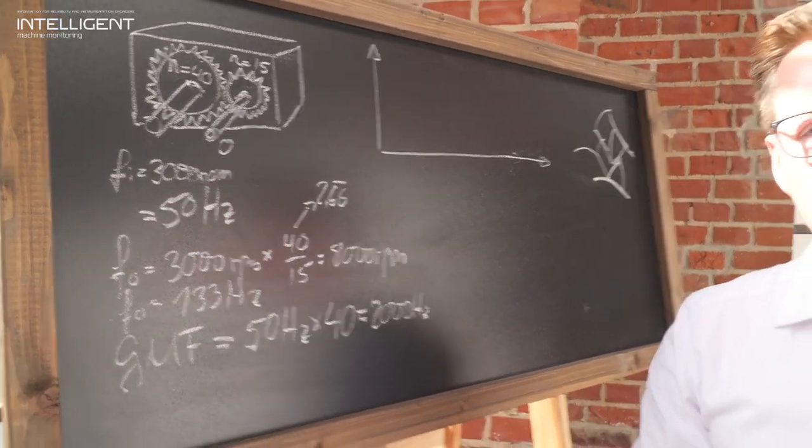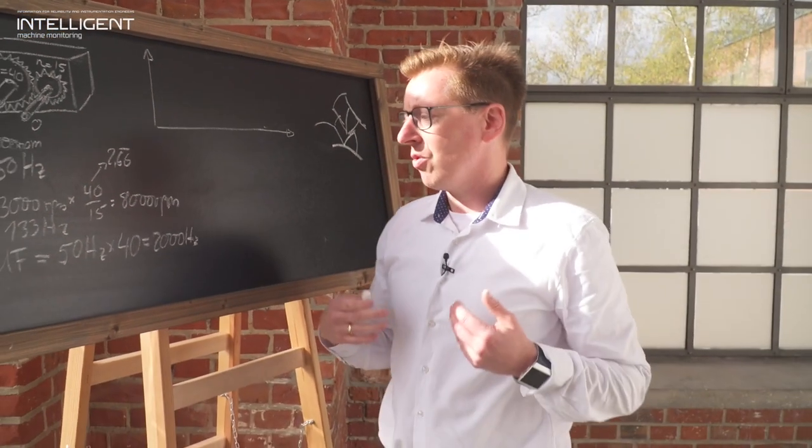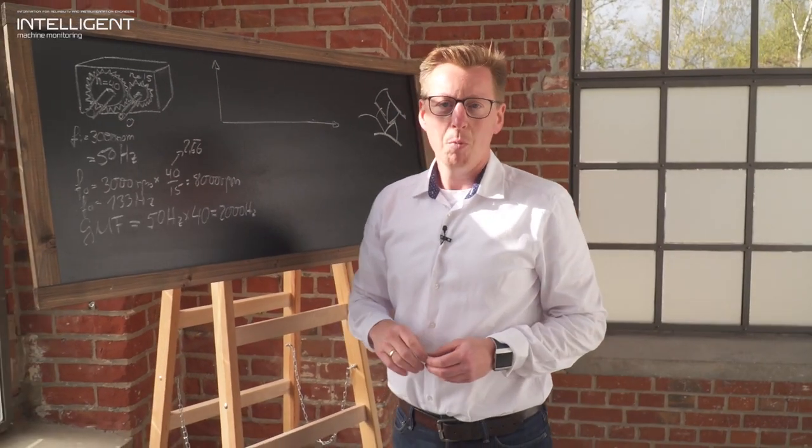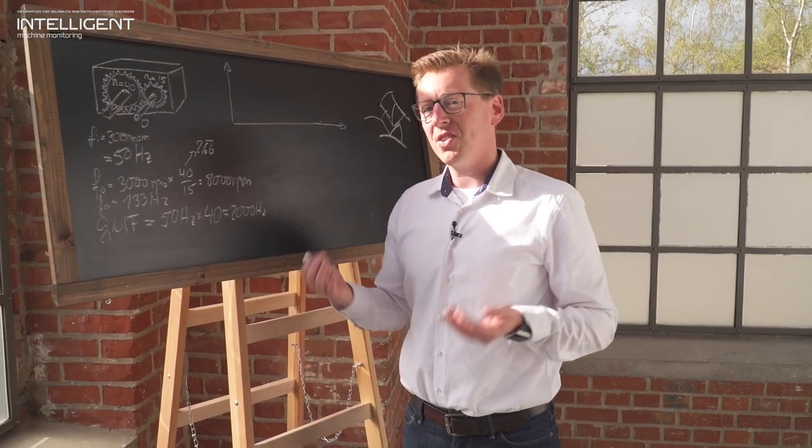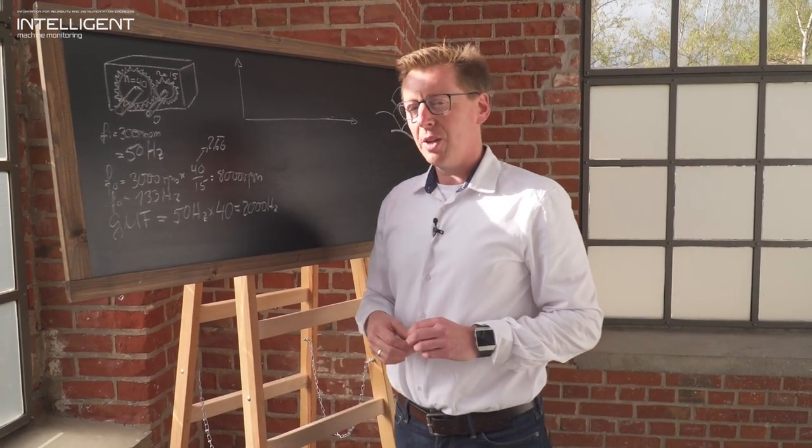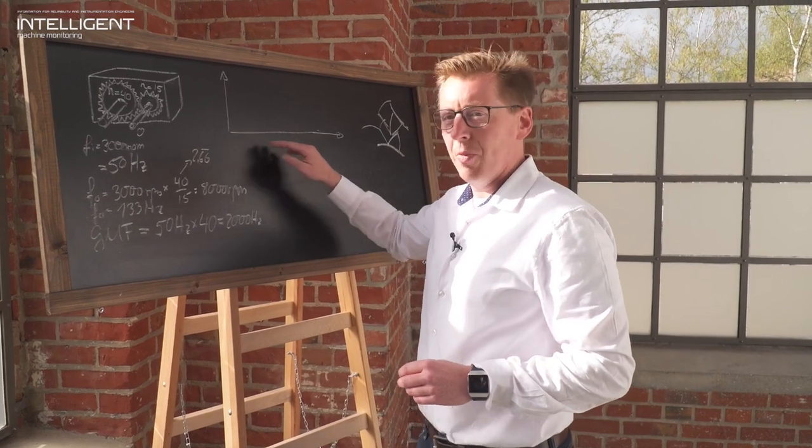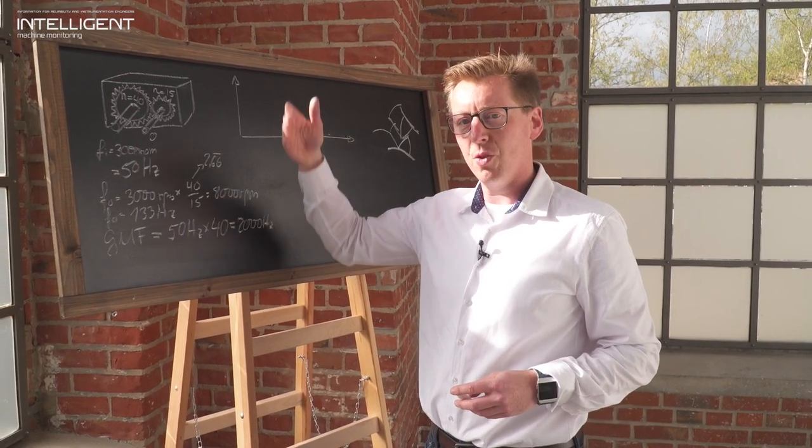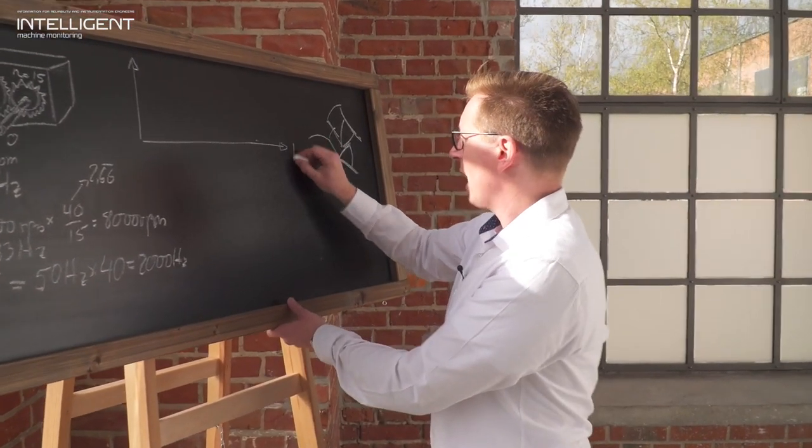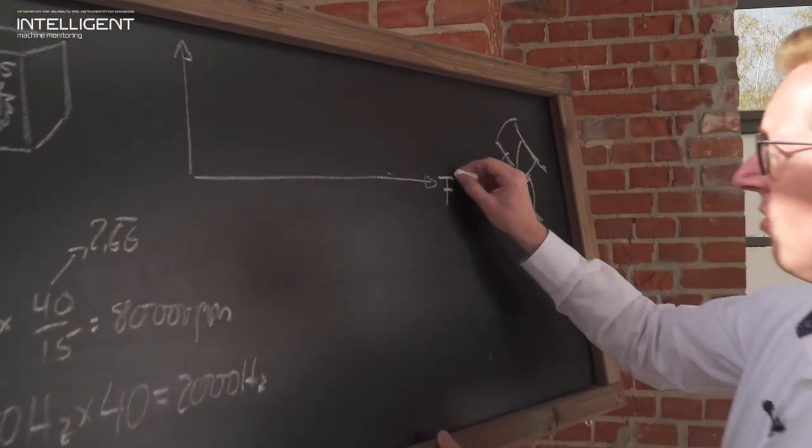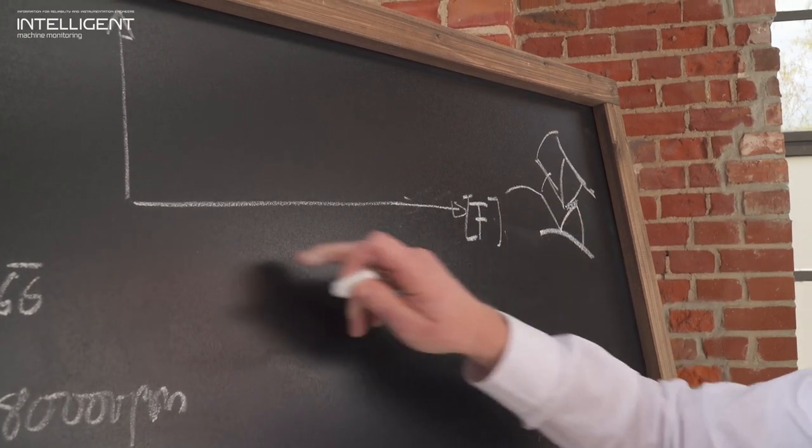And this gear mesh frequency is important for everything you do around gear monitoring because as soon as you turn the gear you will see this as the prominent frequency in your spectrum, in your fast Fourier transformation, your spectral data where you have the axis labeled with frequency on the x-axis,